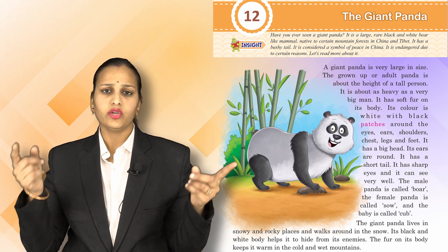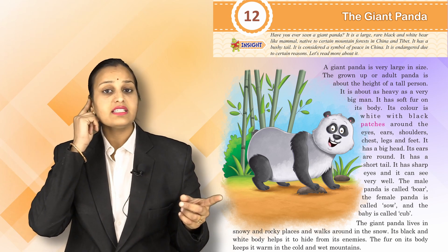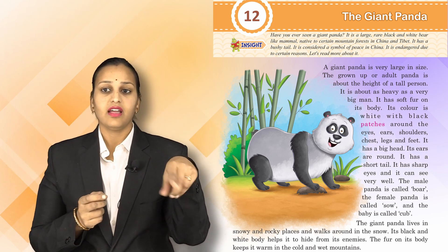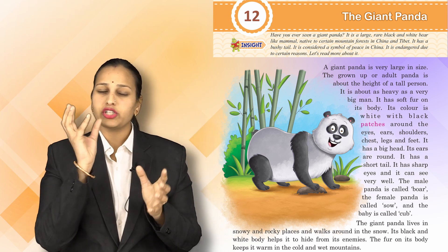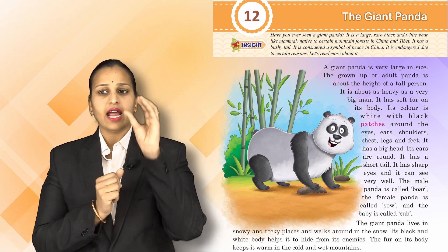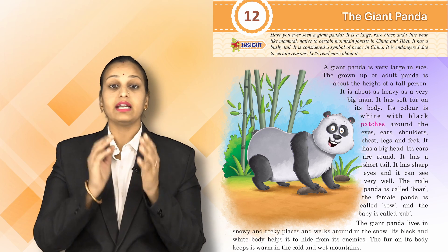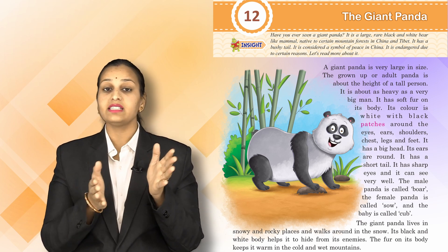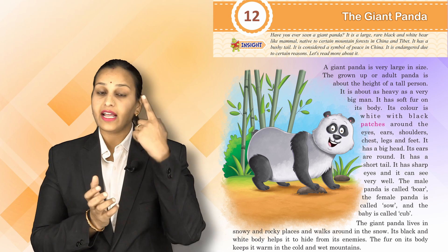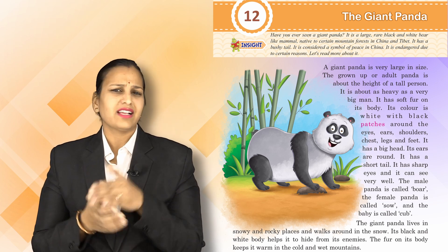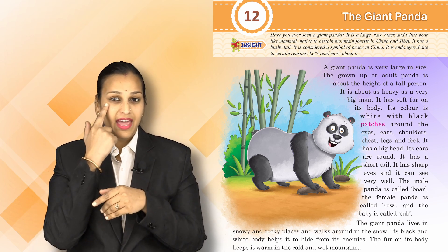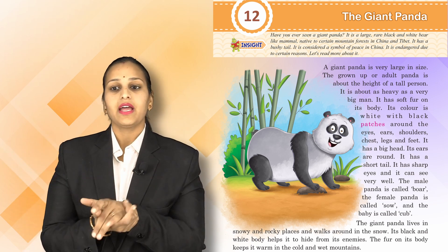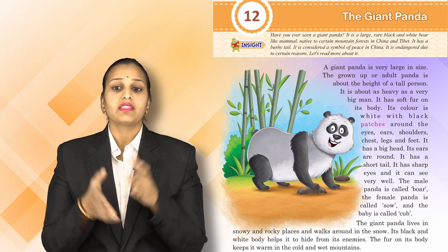A panda has very soft fur, a very big head, and round ears — unlike human ears. It has a bushy, soft, and small tail. It also has very sharp eyes, so it can see very well.